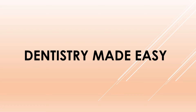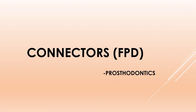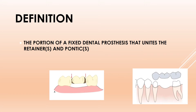Moving on to connectors in FPD — the definition of a connector is a portion of a fixed dental prosthesis that unites the retainers and the pontic. These are the three basic components of the FPD: retainer, pontic, and connector. The retainers sit on the abutment, and the pontic is the middle component. The colored portion joining both is the connector.